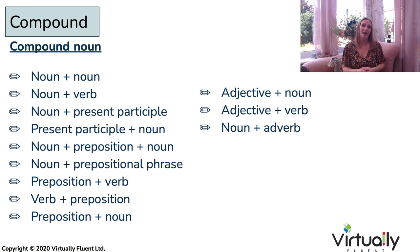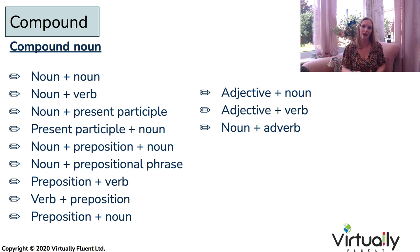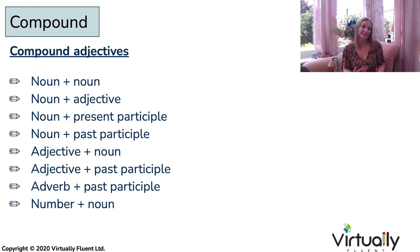Generally with compound nouns, the first part — regardless of what word function it has — tends to explain the purpose of the noun, and the second part tends to be the actual word itself. What is that noun? What is that person or thing? You can see some different ways we create compound adjectives here too. Again, we've got a full list of multiple examples on our website, in our word formation course. So those are the four most important techniques.